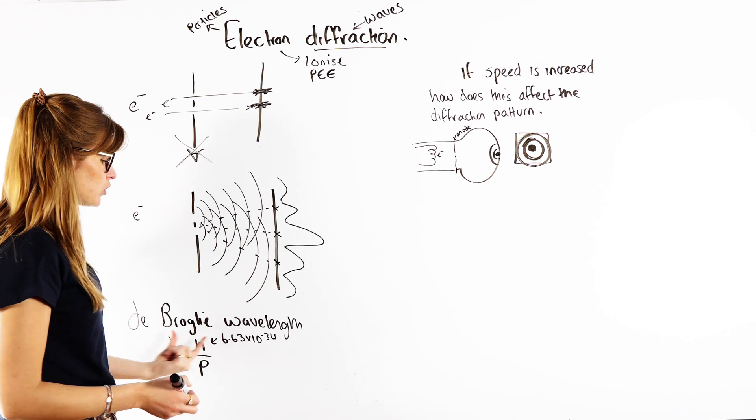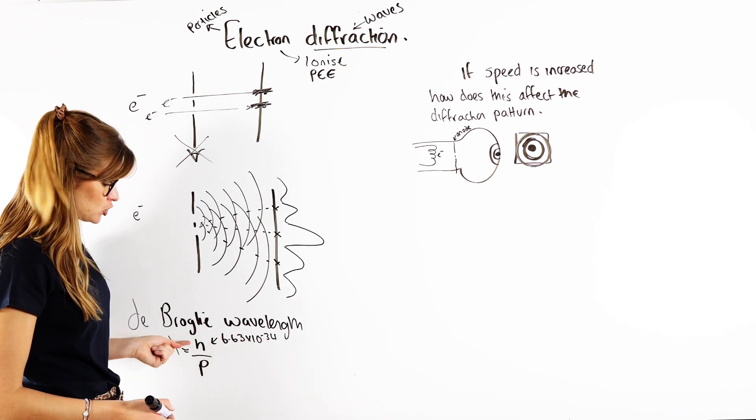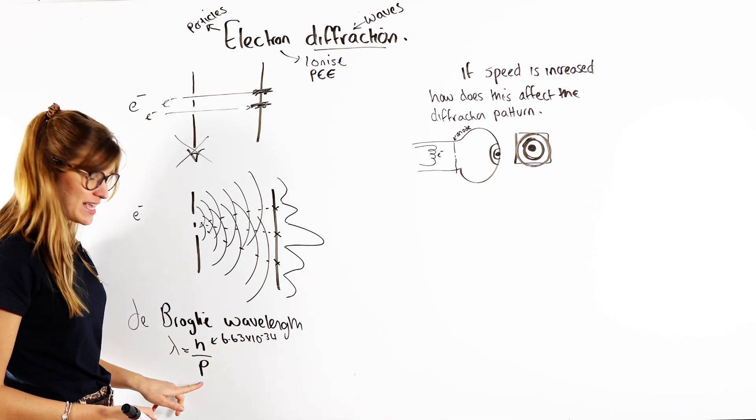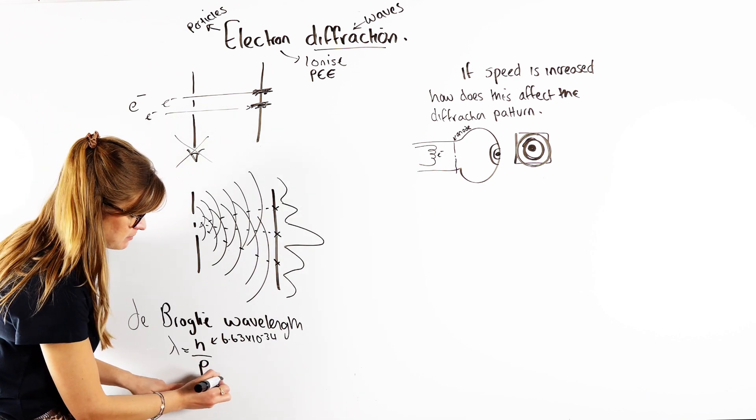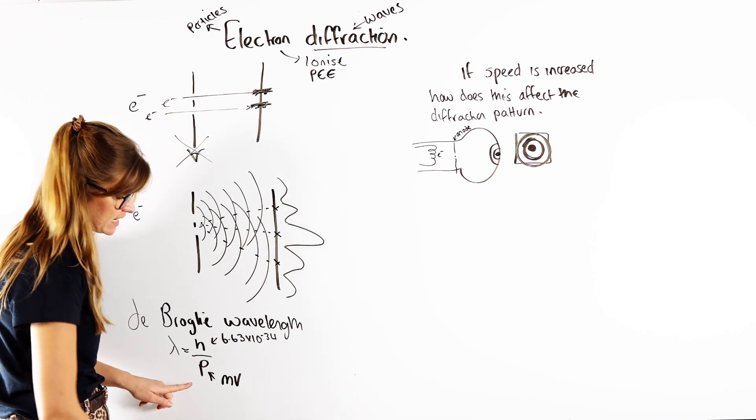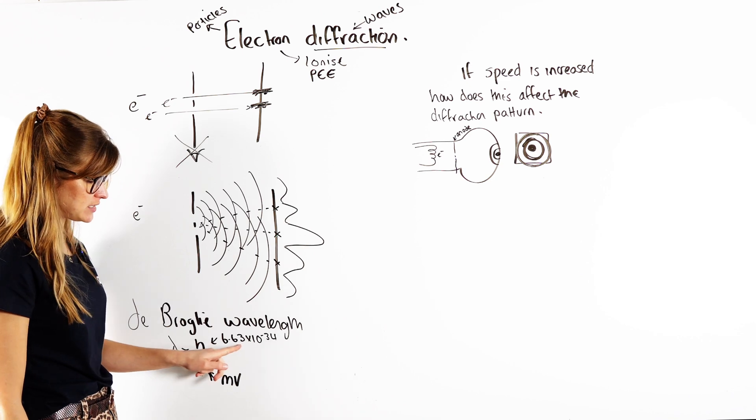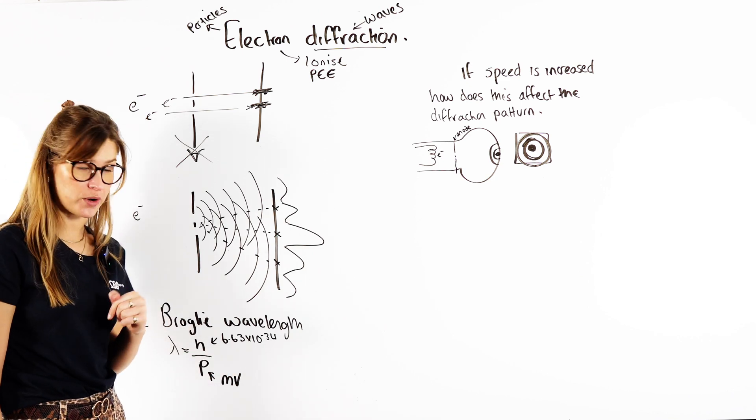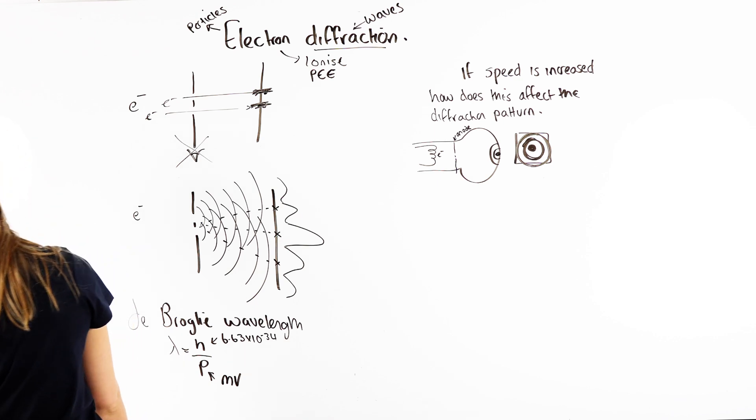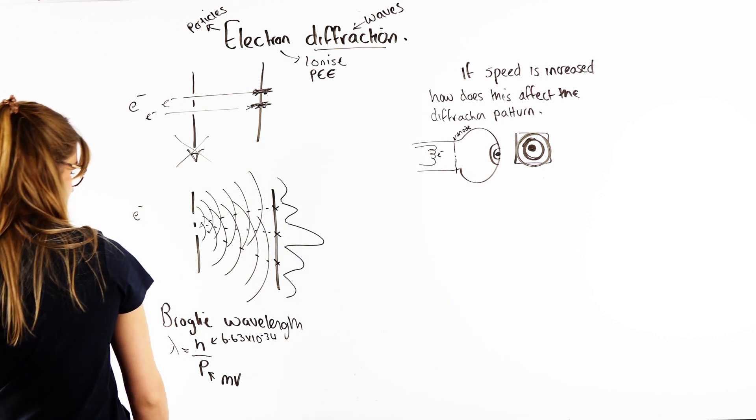So that's when we came up with the de Broglie wavelength. The wavelength of an electron is equal to Planck's constant divided by its momentum. Remember, its momentum is equal to its mass times its velocity. And Planck's constant is a value of 6.63 times 10 to the negative 34. Maybe just double-check that value, actually, because that is off my head.